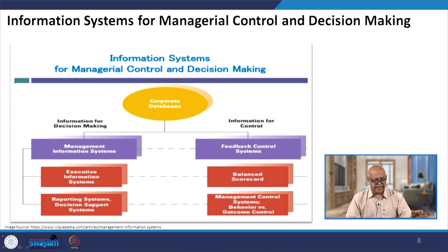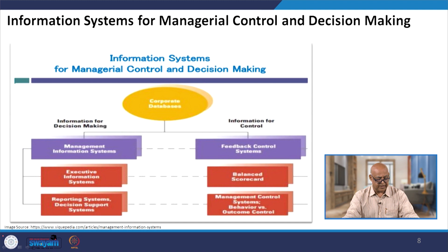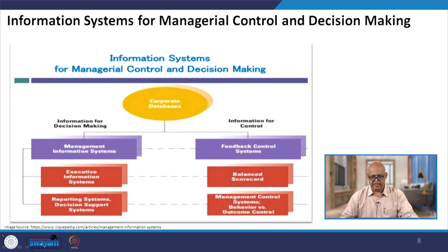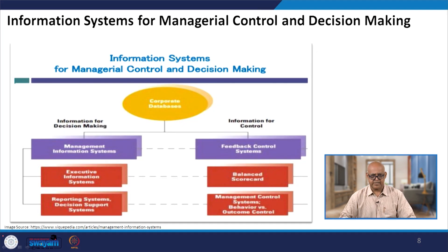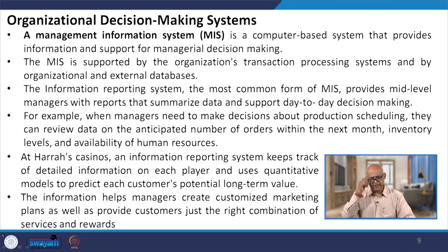Under MIS, executive information systems and reporting/decision support systems operate. Under the feedback control system, the balanced scorecard and management control systems addressing behavior versus outcome control are used. We will now look at these processes in detail.